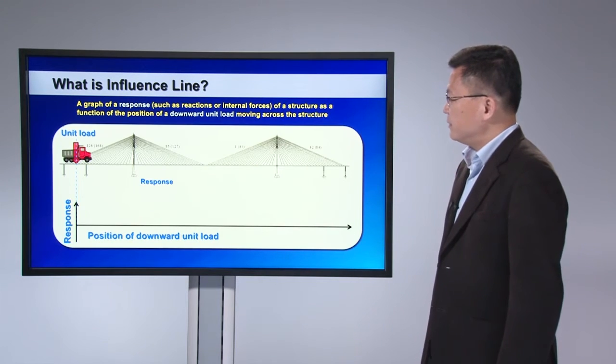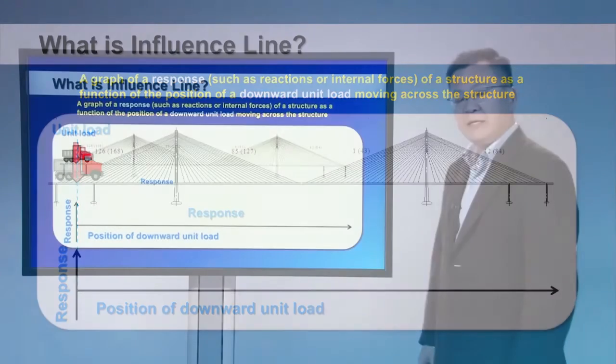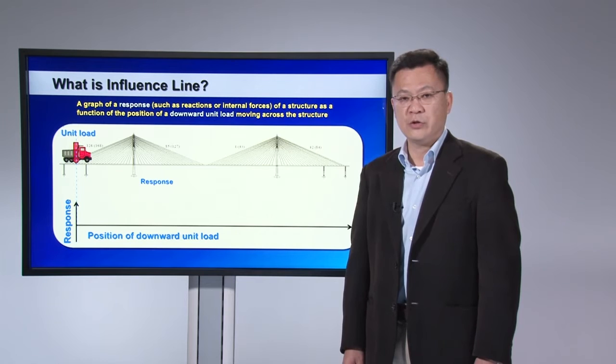So what is influence line? Influence line is defined as a graph of response, which could be a reaction force at the support or internal force at any cross-section of a structure, plotted against the locations of the downward unit force moving across the structures.